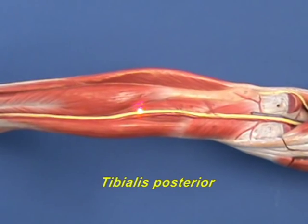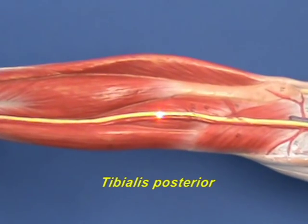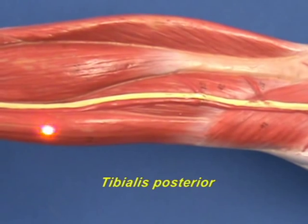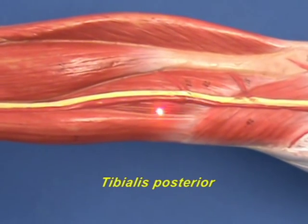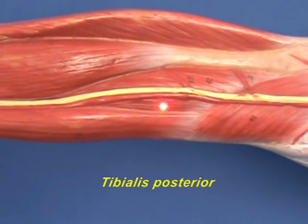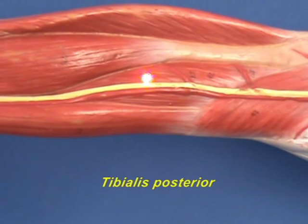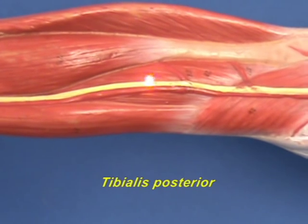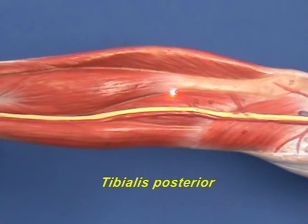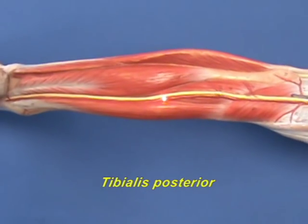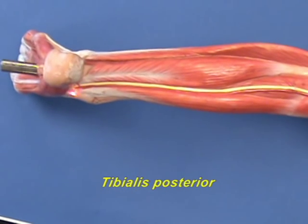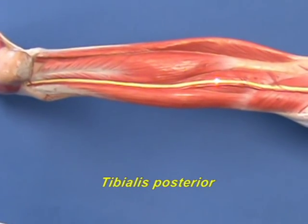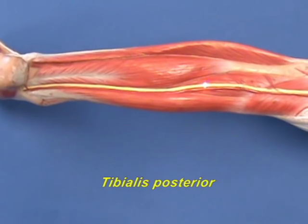The tibialis posterior is located underneath the tibial nerve and between the flexor hallucis longus and the flexor digitorum longus. The tibialis posterior has an origin on the interosseous membrane between the fibula and tibia, and the adjacent bone of both the tibia and the fibula. It inserts on the navicular bone and the medial cuneiform bone. The action of the tibialis posterior is inversion and plantar flexion.